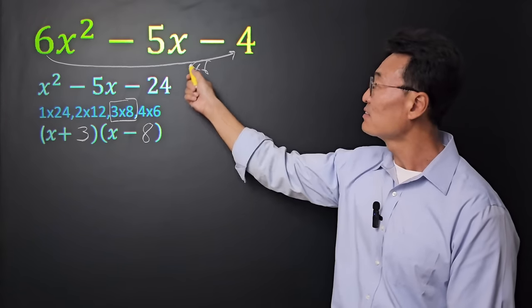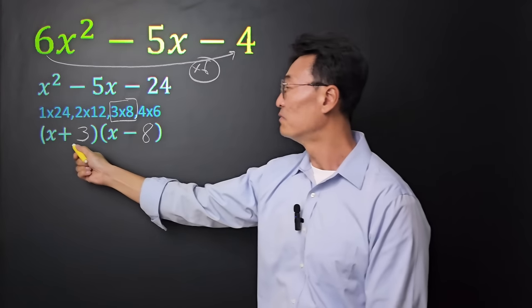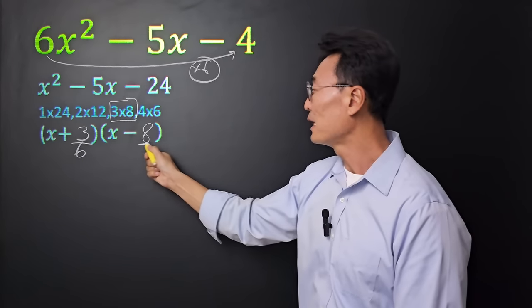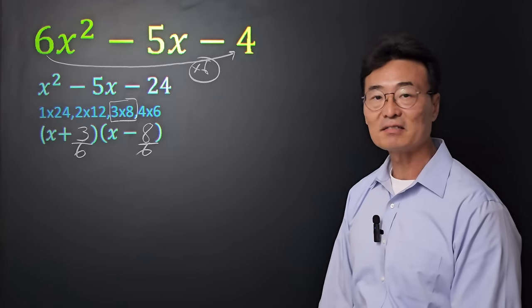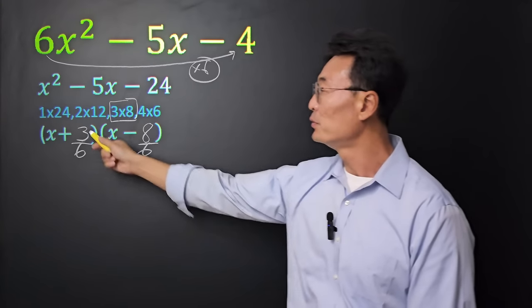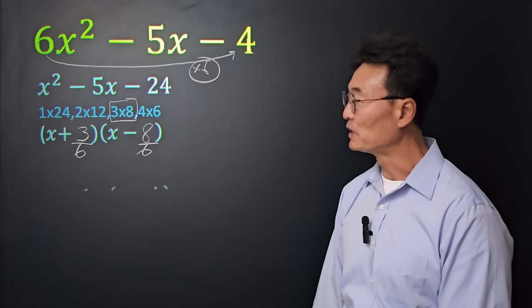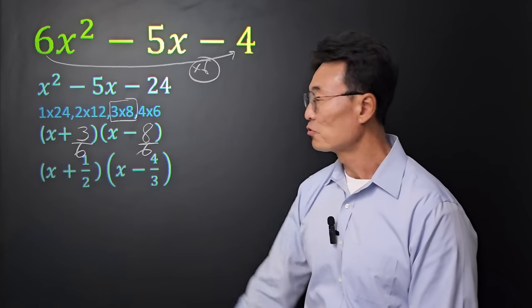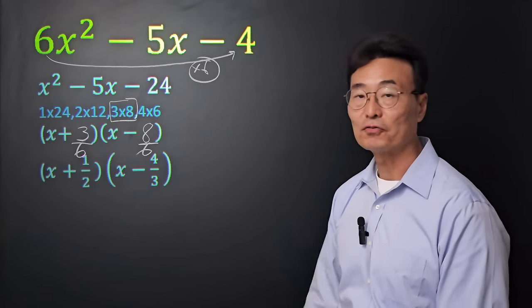Next, here, that 6 that we multiplied, I'm going to divide the 3 and the 8 by 6. And by reducing the 3 over 6 and the 8 over 6, we get x plus 1 half and x minus 4 over 3.